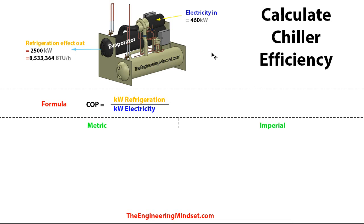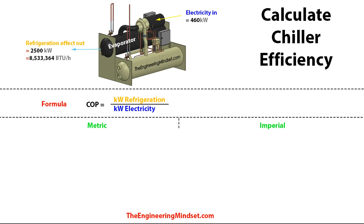The first part of the formula that we need is the electricity in, and that's measured in kilowatts. Now that's very easy to get hold of — you just put on a meter, maybe from your BMS or on the head end of the control panel. Otherwise you can put on some temporary metering and actually grab these numbers. The power consumption by this unit will vary by the amount of load that's placed on the compressor, so as the cooling load of the chiller changes, so will the load on the compressor. So you want to keep a log of that.